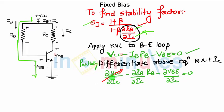Now in this, you have Vcc constant, Vbe constant. Derivative of constant with respect to anything is 0. So what you write, change in Ib by change in Ic into Rb equals 0.